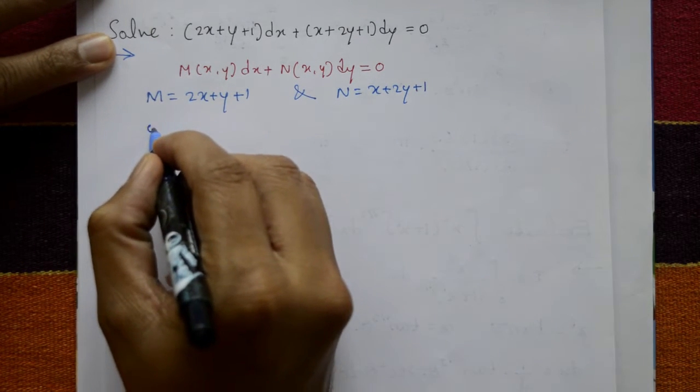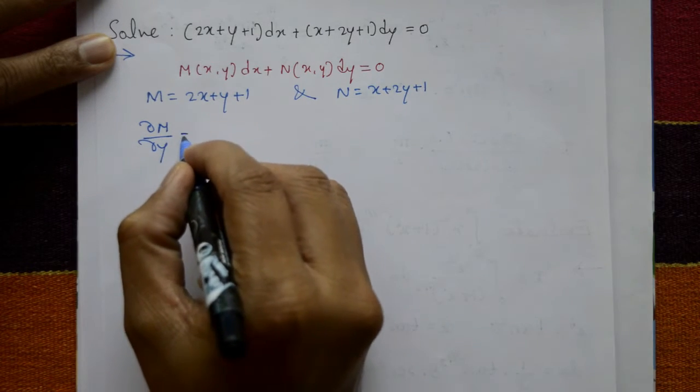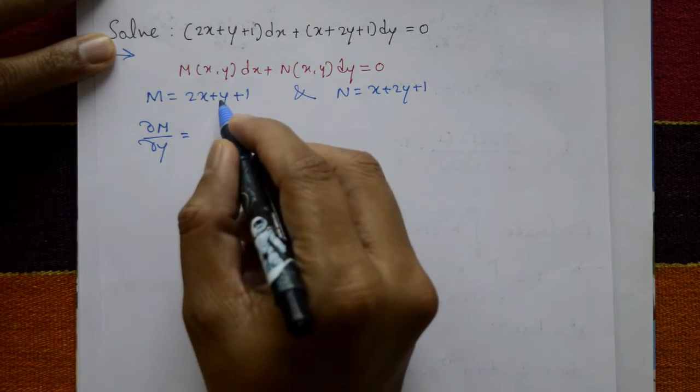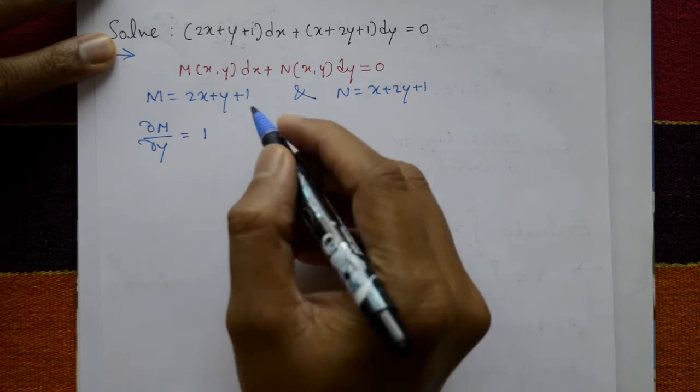Now differentiate M with respect to y partially, ∂M/∂y. With respect to y partially means 1 only. Zero and this is zero. This becomes 1.